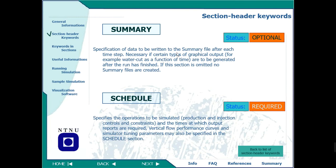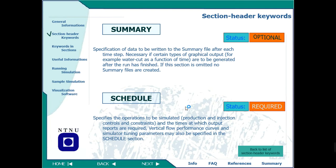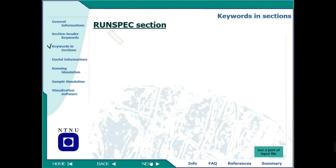Then we have the SUMMARY section, which tells us what results you want. This is optional in the sense that you don't need to put everything, but at least some outputs are compulsory — for example, field oil production rate, field total production over ten years, and so on. Then we have the SCHEDULE section, which tells us how many wells there are, how many groups, till when and what time it will run, and how many years they will run.